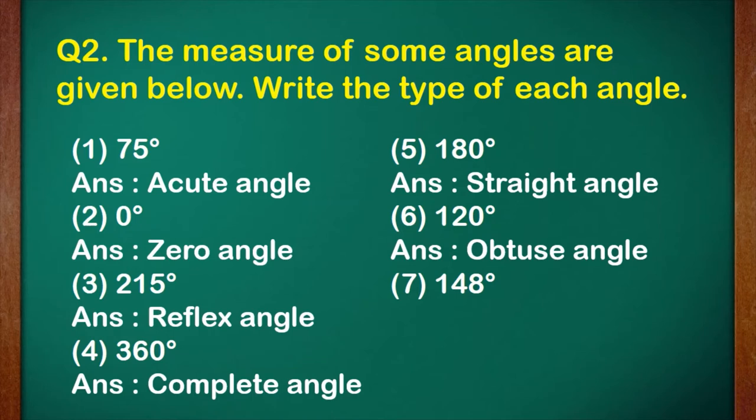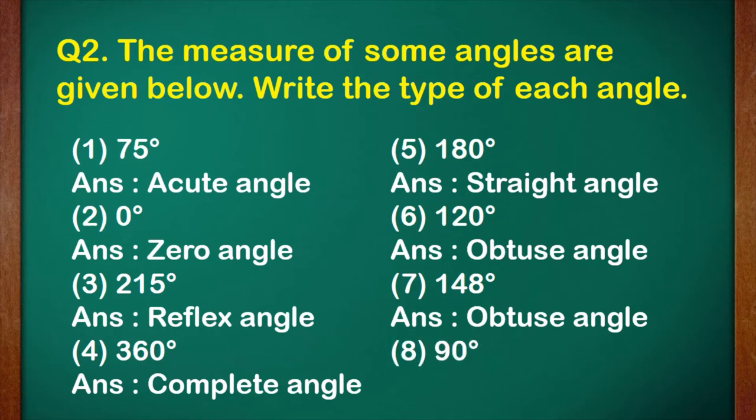Number seven, 148 degrees — it is again an obtuse angle. And number eight, 90 degrees means right angle. These are all the answers for question number two.